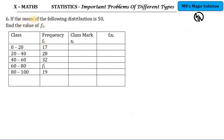Question number 6: If the mean of the following distribution is 50, find the value of f1. So unknown frequency f1, I have to find this. The question gives mean, so mean is x bar which is equal to sigma fi xi divided by sigma fi.